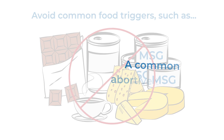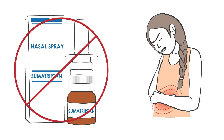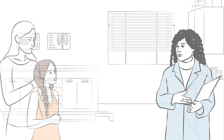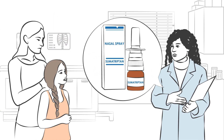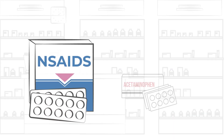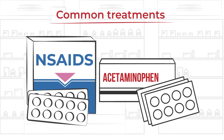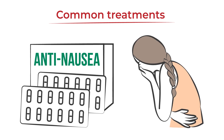A common abortive therapy is nasal sumatriptan. It is not approved for pediatric use; however, some doctors may still prescribe it after assessing the patient. NSAIDs and acetaminophen are common treatments as well. Anti-nausea medications are commonly a part of the treatment plan due to the high prevalence of nausea and vomiting.